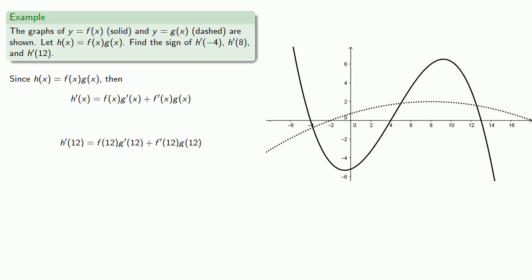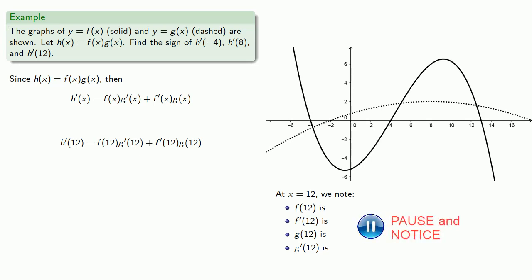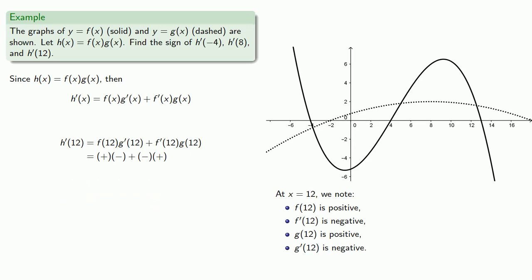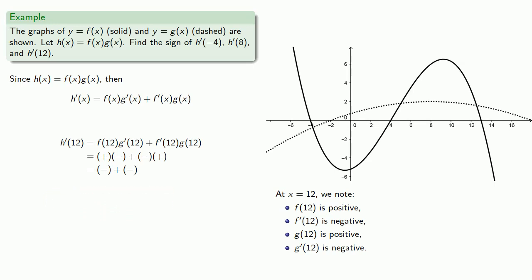Looking at h prime of 12, we need to know about f of 12, g prime of 12, f prime of 12, and g of 12. At x equals 12, h prime of 12 is a positive number times a negative number, plus a negative number times a positive number. The product of a positive and negative is negative, so h prime of 12 is the sum of two negative numbers. Adding two negative numbers gives a negative number, so h prime of 12 is negative.